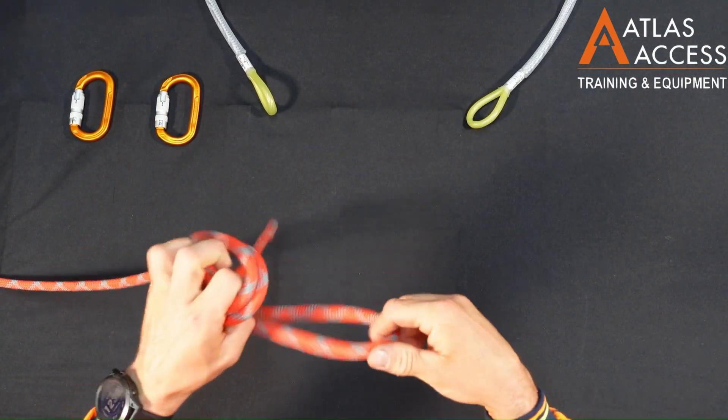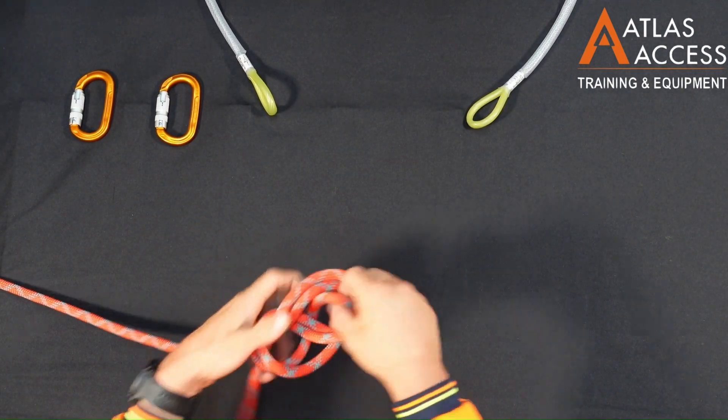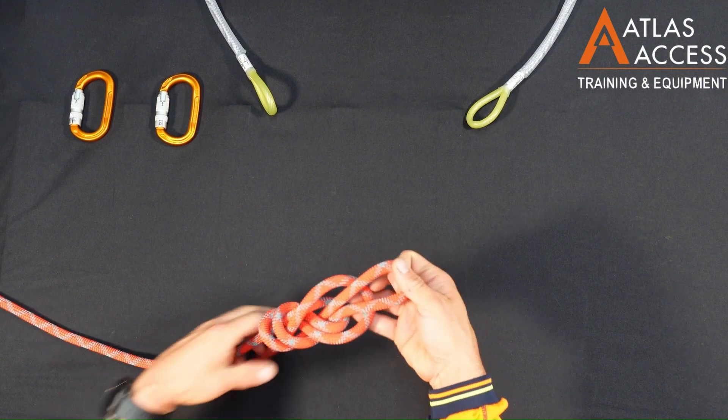Create your figure eight on the end of the rope. Ensure there are no crossovers and pull the knot tight.